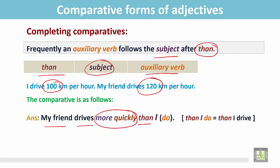And then we write than and the other subject here, I. And the auxiliary verb for this subject is do. Here you see, than I do. It means than I drive. We don't write drive again. We write instead of this, the auxiliary verb do.